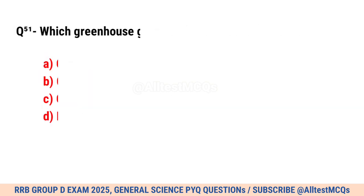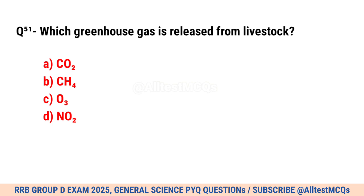Question No. 51. Which greenhouse gas is released from livestock? Correct option is B. CH4.